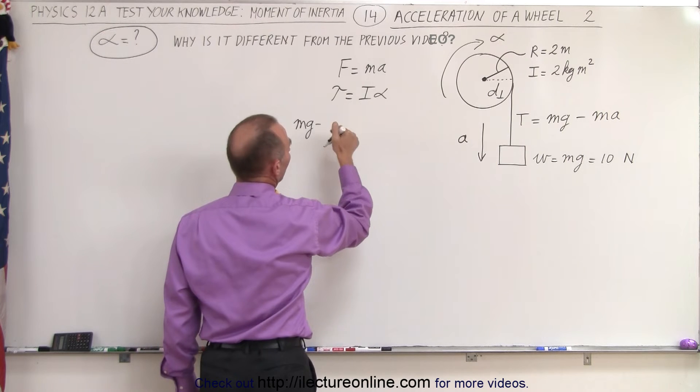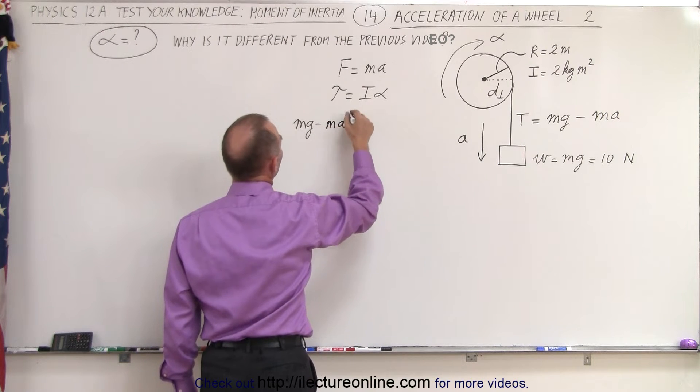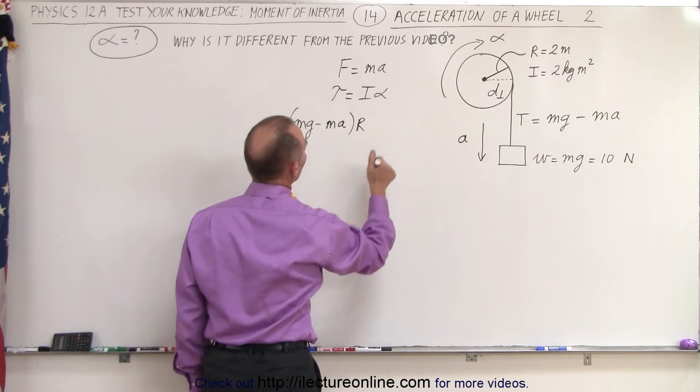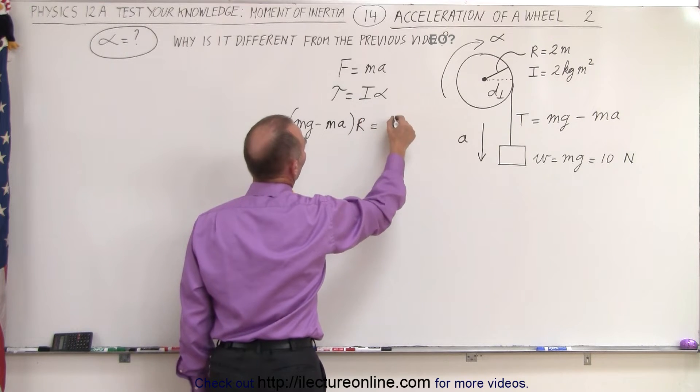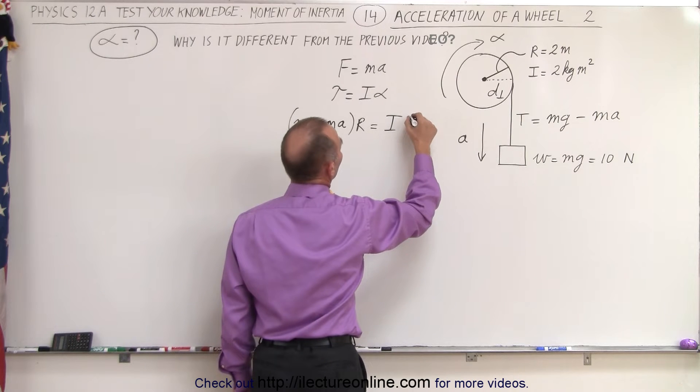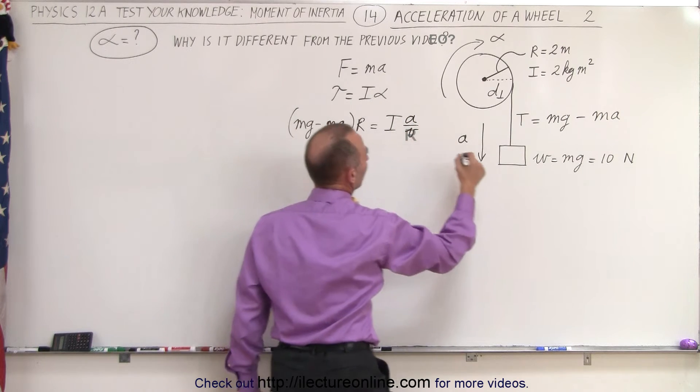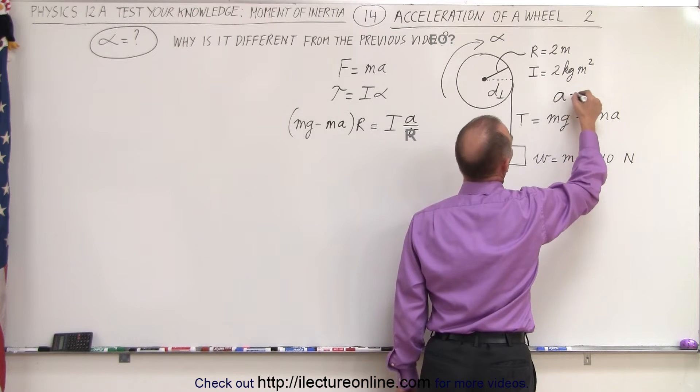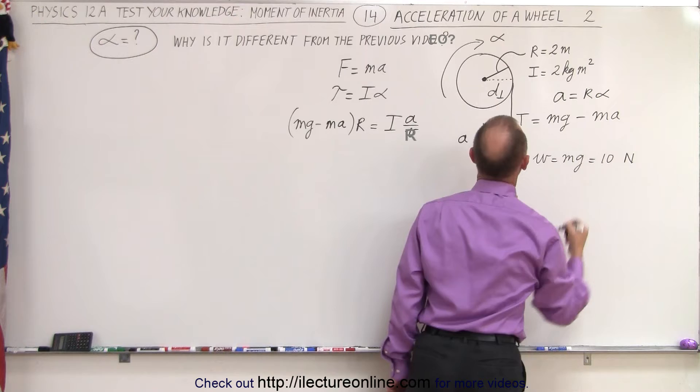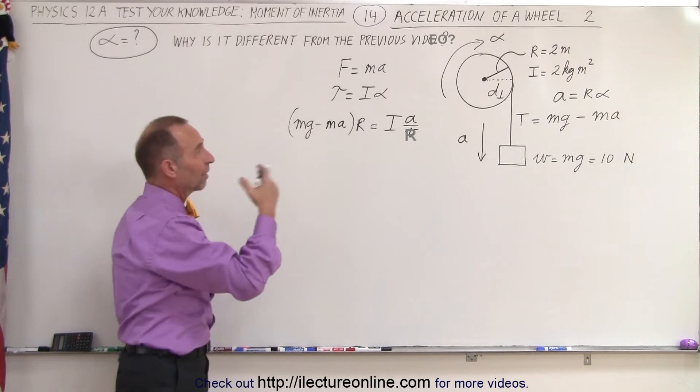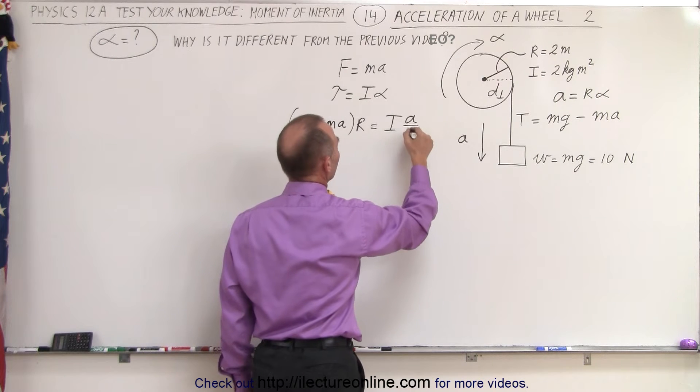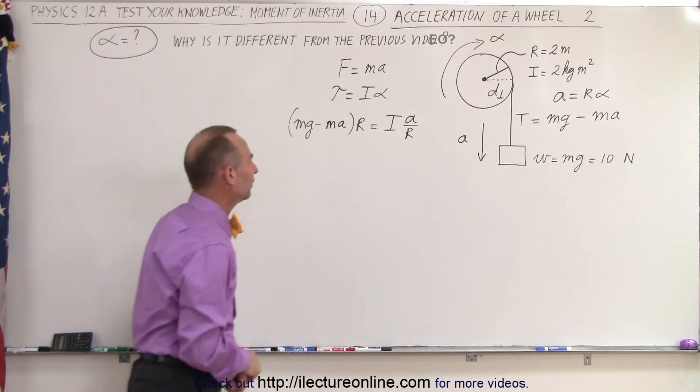So that would be (Mg minus MA) times the radius, which is the perpendicular distance, and that equals the moment of inertia I times the angular acceleration, which can be written as A over R. Remember that the linear acceleration, the tangential acceleration, is equal to the radius times the angular acceleration, so the angular acceleration can be written as A over R, not A over V. Good thing I did that to catch my error.